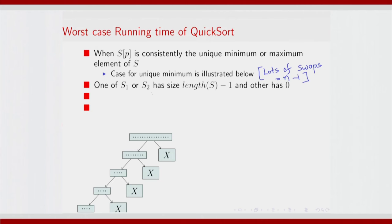Let us try and understand this. Suppose you split s and it turns out that one of s1 or s2 has size length(s) minus 1 and the other has size 0, which means you had to adjust length(s) and length(s) minus 1 elements. Suppose this is the case for every subsequence split — that one of them has every element except the pivot. The pivot has always been chosen to be the least or the greatest, and this basically leads to a completely skewed binary tree.